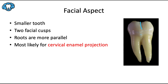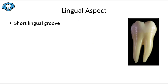That cervical enamel projection has some consequences — it can make the tooth unfortunately vulnerable to the development of a periodontal pocket in that area. For the lingual aspect, it's basically very similar to the mandibular first molar. The lingual cusps are sharper and taller, the lingual groove is very short and also in line with the furcation, and the root trunk is longer on the lingual than on the facial surface — same as the first molar. The only difference is the root trunk overall is a bit longer on this tooth than it was on the first molar.